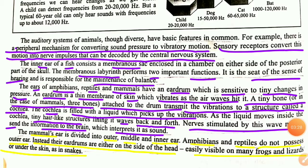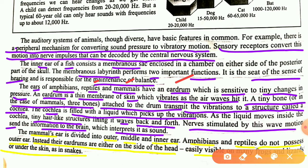In amphibians, reptiles, and mammals, an ear drum is present which is sensitive to tiny changes in pressure. The ear drum is made of a thin membrane of skin that vibrates as air waves hit it. In mammals, there are three tiny bones attached to the drum that transmit vibrations to a structure called the cochlea. Inside the cochlea there are tiny hair-like structures and liquid; these hair-like structures move back and forth with the waves, stimulating nerves that send information to the brain.